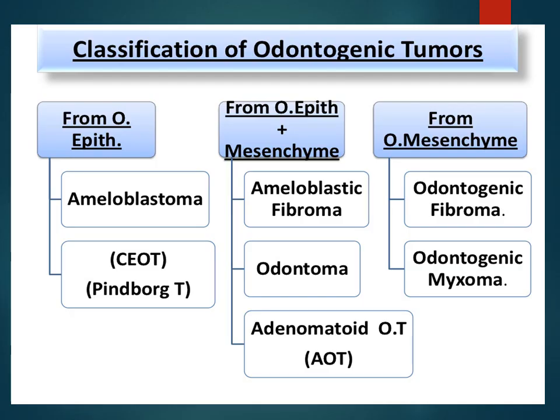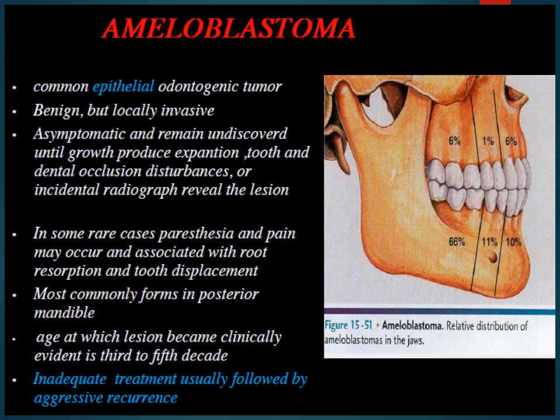This slide will recap the classification of odontogenic tumors. There are three types. First, from oral epithelium: ameloblastoma and calcifying epithelial odontogenic tumor, which is the Pindborg tumor. Second, from oral epithelium plus mesenchyme, with three subtypes: ameloblastic fibroma, odontoma, and adenomatoid odontogenic tumor. The third type is from oral mesenchyme only, which includes odontogenic fibroma and odontogenic myxoma. Now we discuss ameloblastoma, which is part of the oral epithelial odontogenic tumor group.